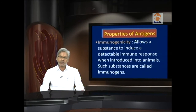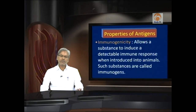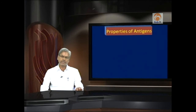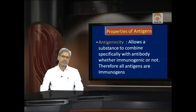Two important properties of antigens need to be stressed. One is immunogenicity — this property allows a substance to induce a detectable immune response when introduced into animals; such substances are called immunogens. Another important property is antigenicity — this property allows a substance to combine specifically with an antibody whether immunogenic or not. Therefore, all antigens are immunogens.